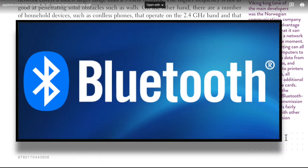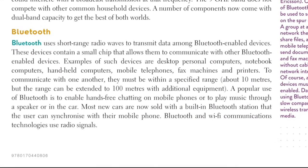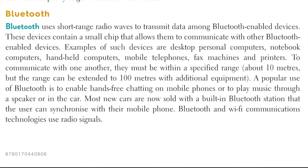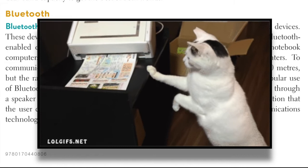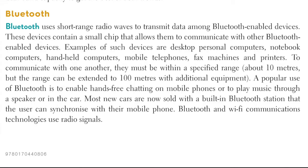Bluetooth uses short-range radio waves to transmit data along Bluetooth-enabled devices. These devices contain a small chip that allows them to communicate with other Bluetooth-enabled devices. Examples include desktop personal computers, notebook computers, handheld computers, mobile phones, fax machines, and printers. To communicate with one another, they must be within a specified range of about 10 metres, but the range can be extended to 100 metres with additional equipment.